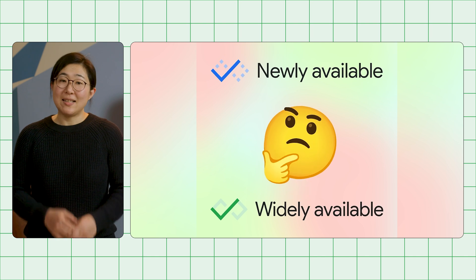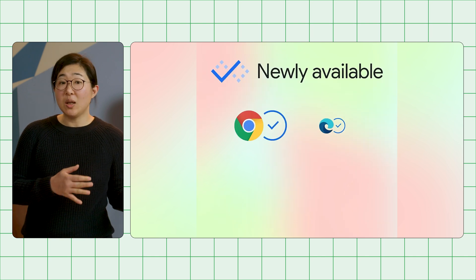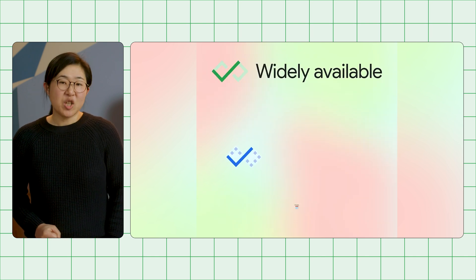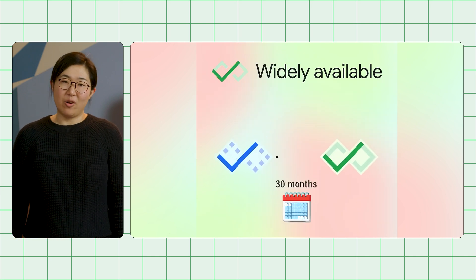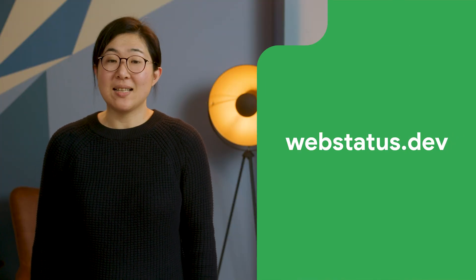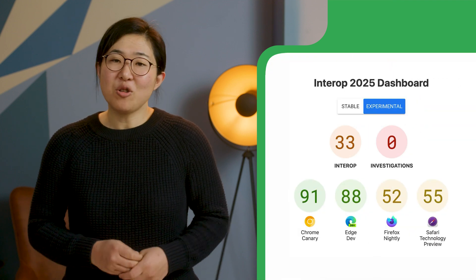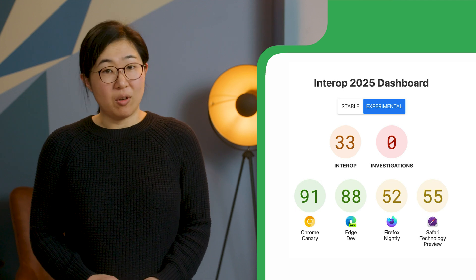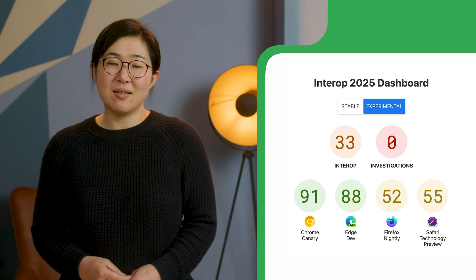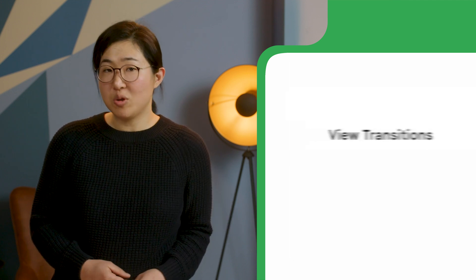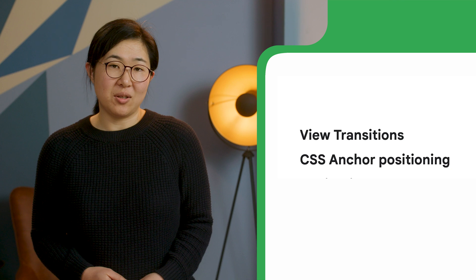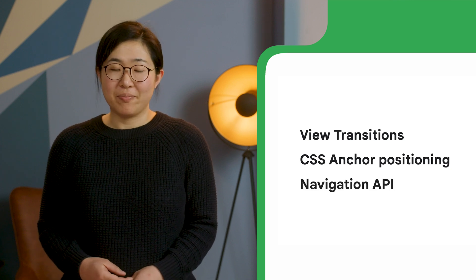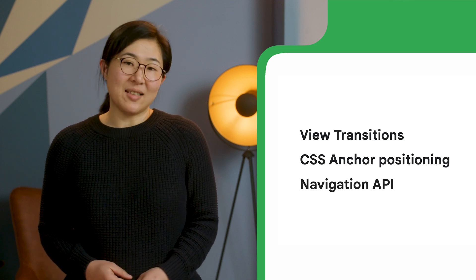If you want to know more about baseline and the difference between newly and widely available, check out this short video I made. You can also find more about the baseline status of a feature at the Web Platform Status Dashboard. And lastly, the Interop project is returning for 2025, with a list of focus areas including view transitions, CSS anchor positioning, and navigation API. Be sure to check out the project's announcement.